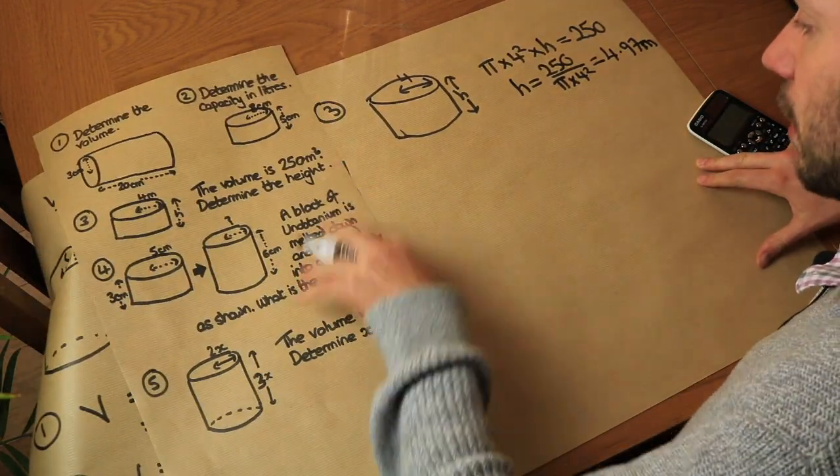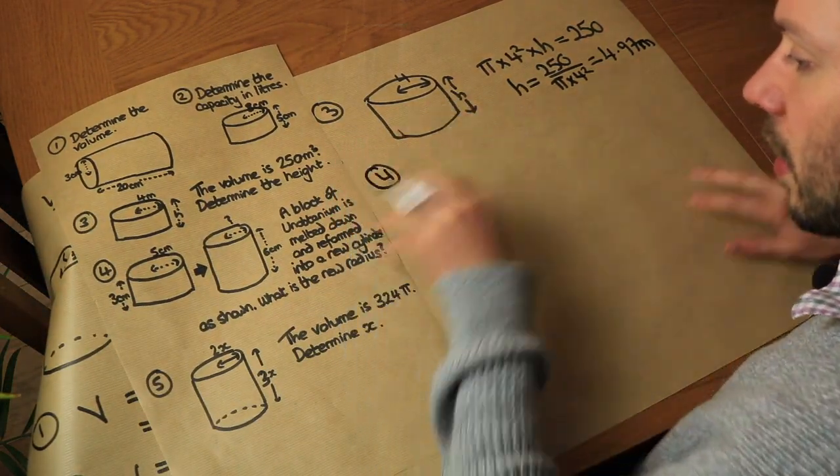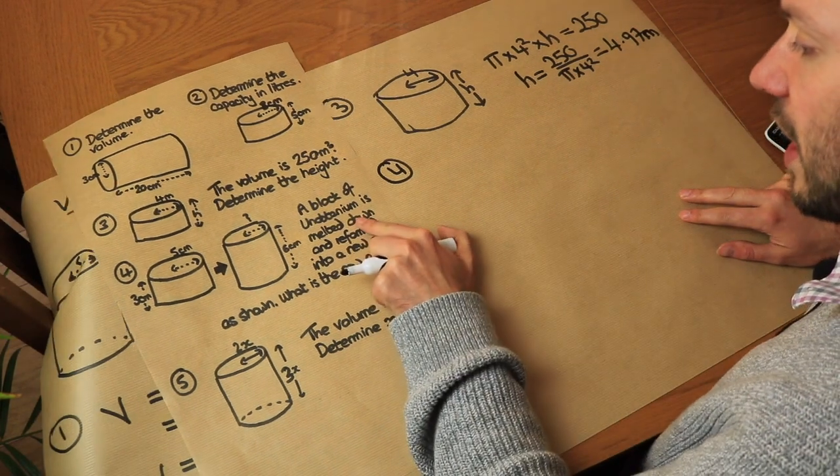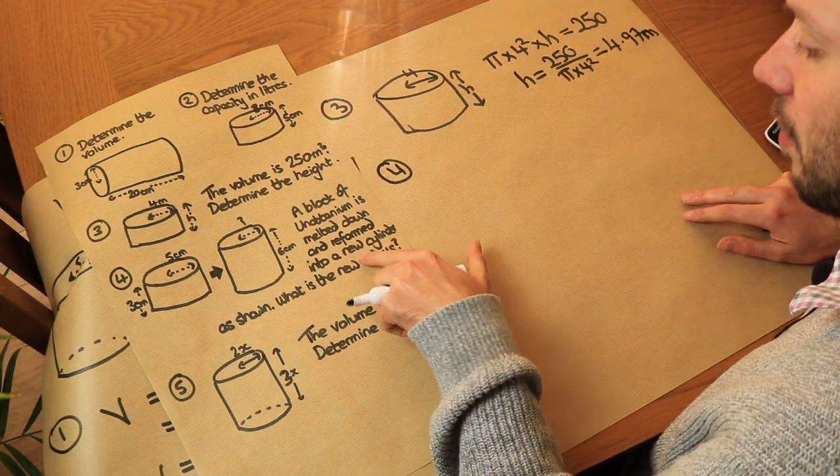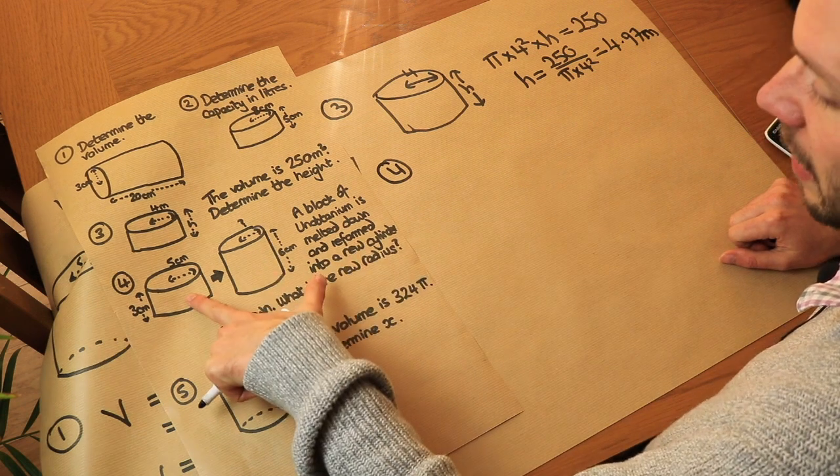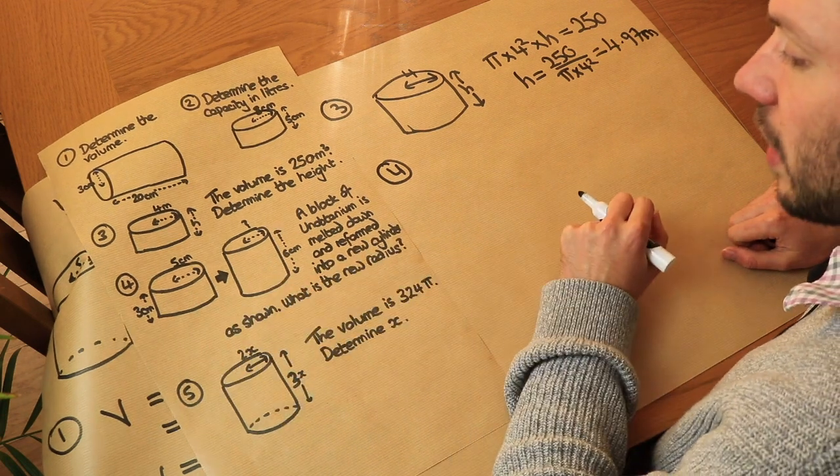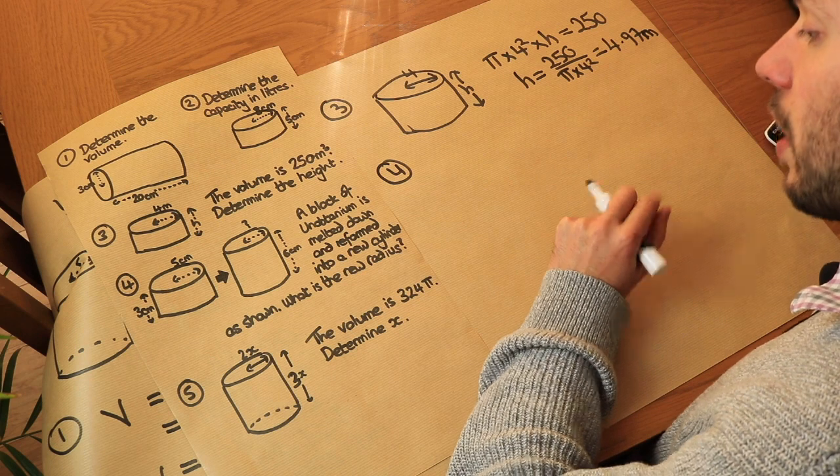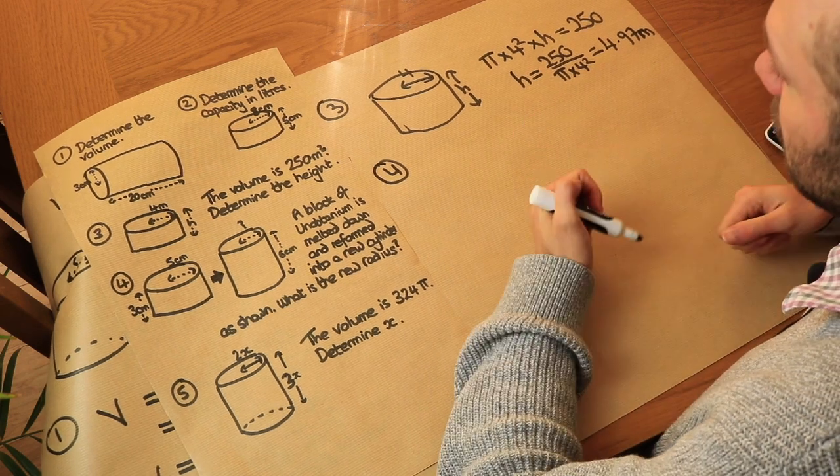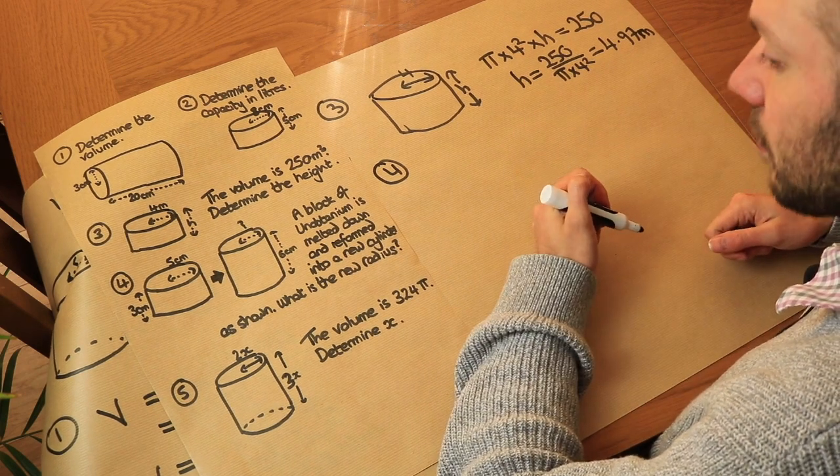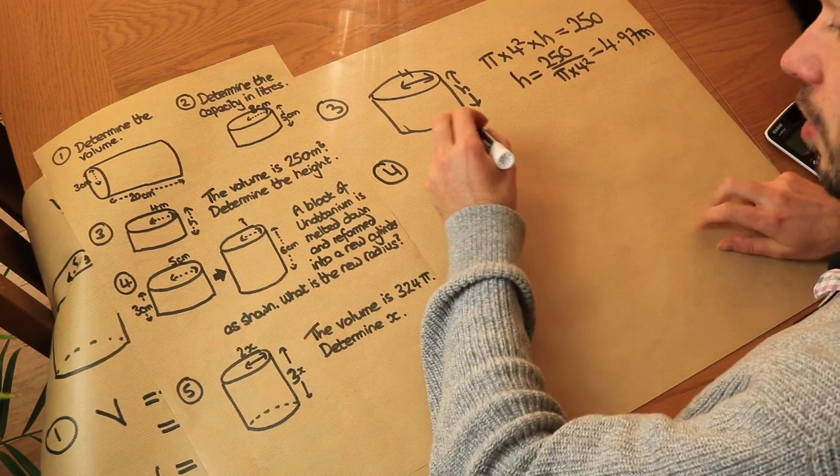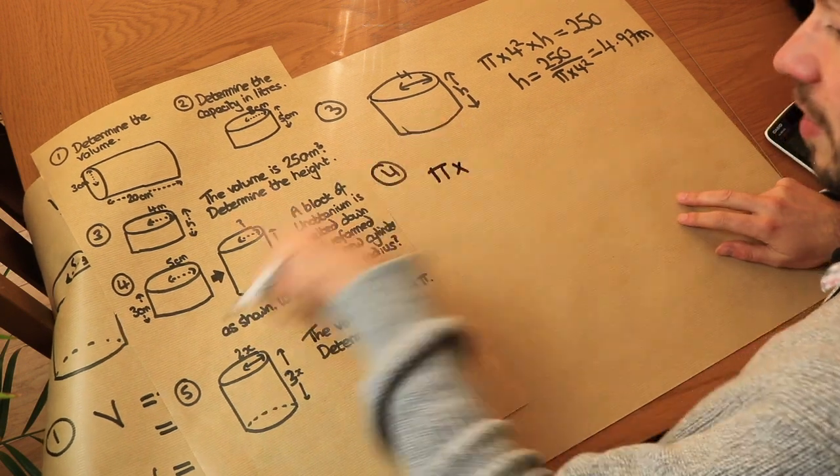Right, what about the next one? A block of unobtainium is melted down and reformed into a new cylinder as shown. So that is melted down to form this. What is the new radius? Well if it's melted down the volume is going to be the same before and after.